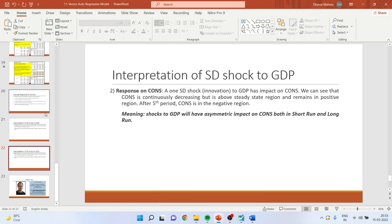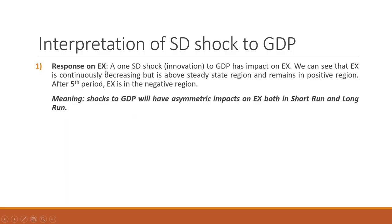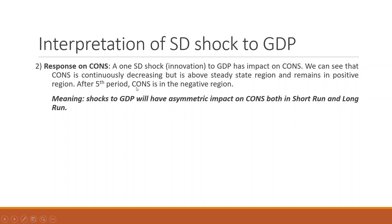How to interpret technically: a one standard deviation shock to GDP has an impact on export. Consumption is continuously decreasing but remains above the steady-state region in the positive region. After the fifth period, export enters the negative region. Shocks to GDP will have an asymmetric impact on export both in the short run and long run. Similarly, a one standard deviation shock to GDP has an asymmetric impact on consumption both in short run and long run.